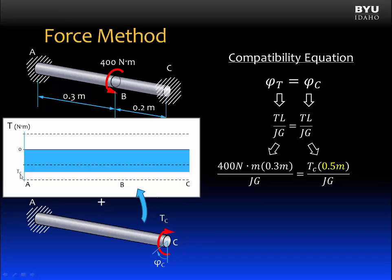The internal torque is equal to T sub C and is constant from the end at C all the way to A. In our equation, we will substitute T sub C in for T. The length is the length of the shaft that is feeling that internal torque, which is the whole shaft from the wall at A to the torque at the end at C. So the length is 0.5 meters over JG.